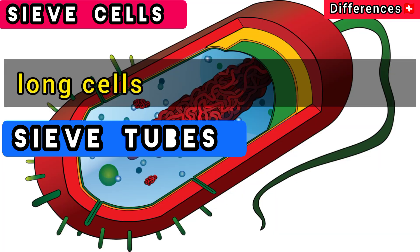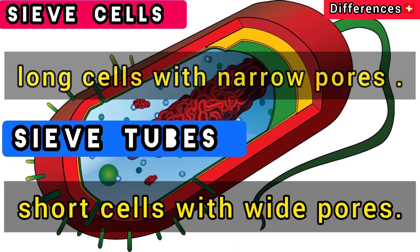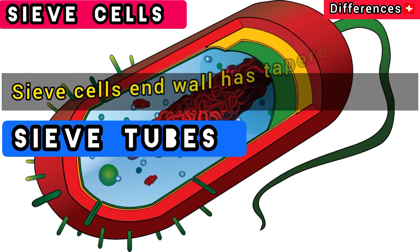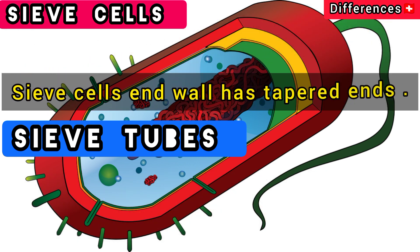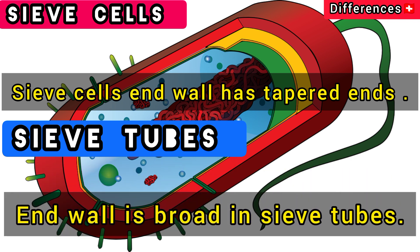Sieve cells are long cells with narrow pores, while sieve tubes are short cells with wide pores. The end wall of sieve cells has tapered ends, whereas the end wall is broad in sieve tubes.